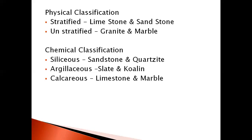The next type is unstratified rock — rocks in which we cannot see any strata. These are called unstratified rocks. Most probably, unstratified rocks will be igneous rocks, for example granite. Another example is marble.